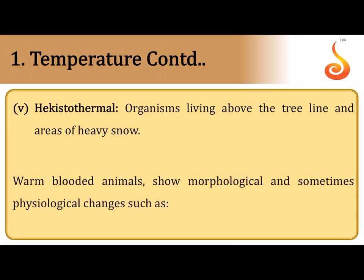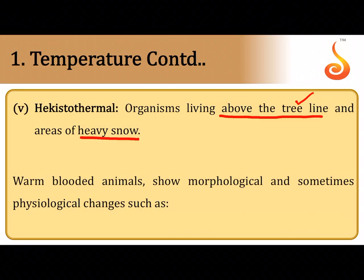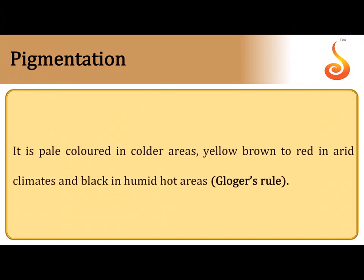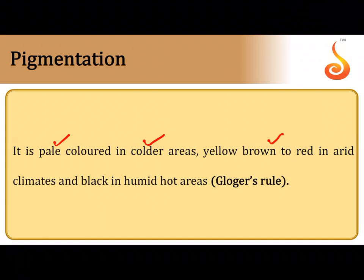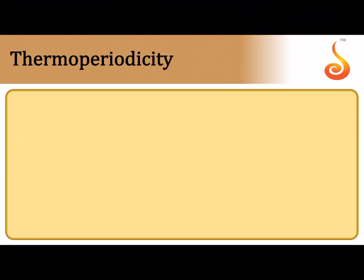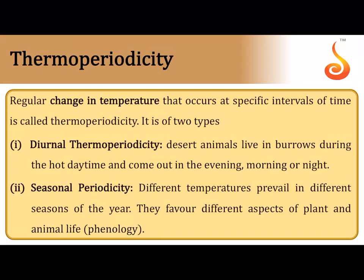Hecistothermal organisms are those living in very cold conditions — for example, those above the tundra tree line, where the ground is permanently covered with snow. Warm-blooded animals show morphological and functional changes in the body. With respect to pigmentation: in colder areas animals exhibit pale-colored pigmentation; in arid climates pigmentation is yellowish-brown to red; and in humid hot areas pigmentation is dark or black. This is referred to as Gloger's rule.